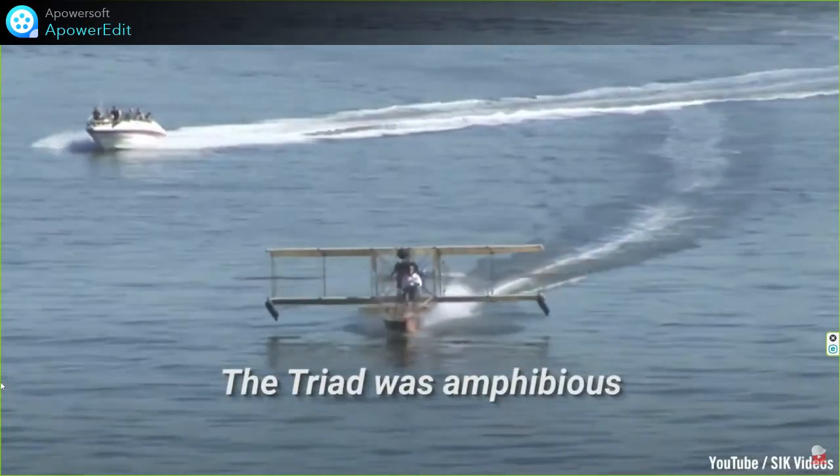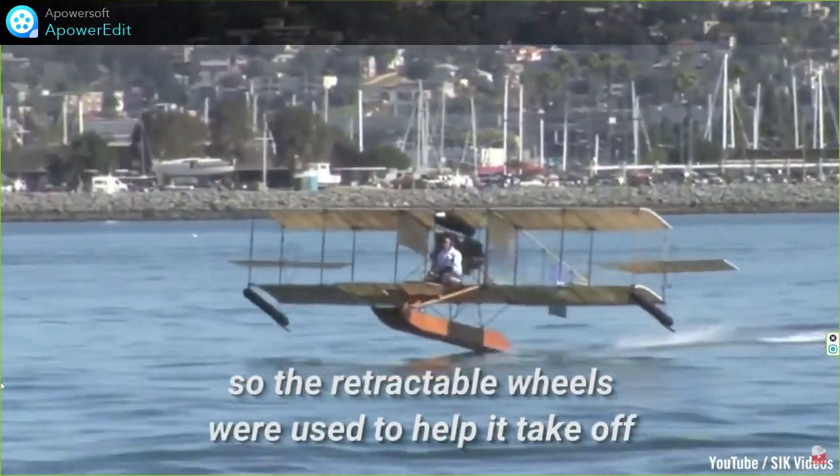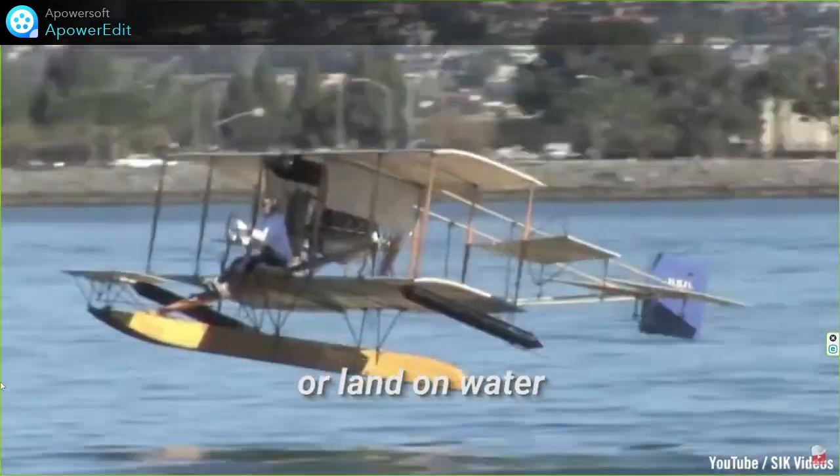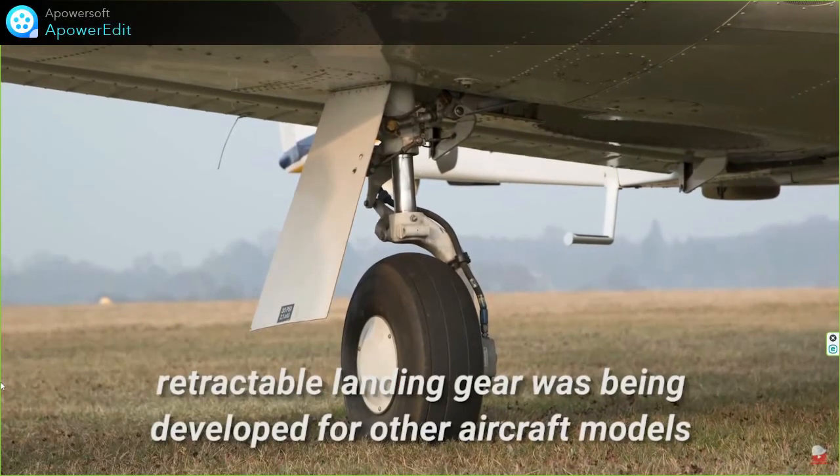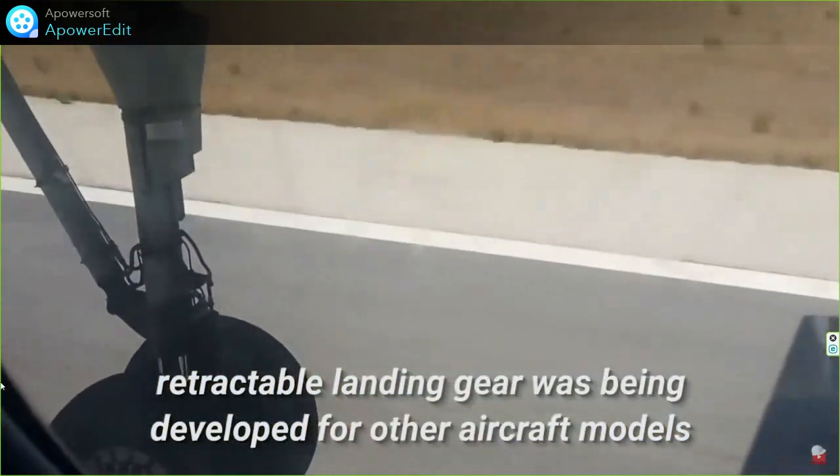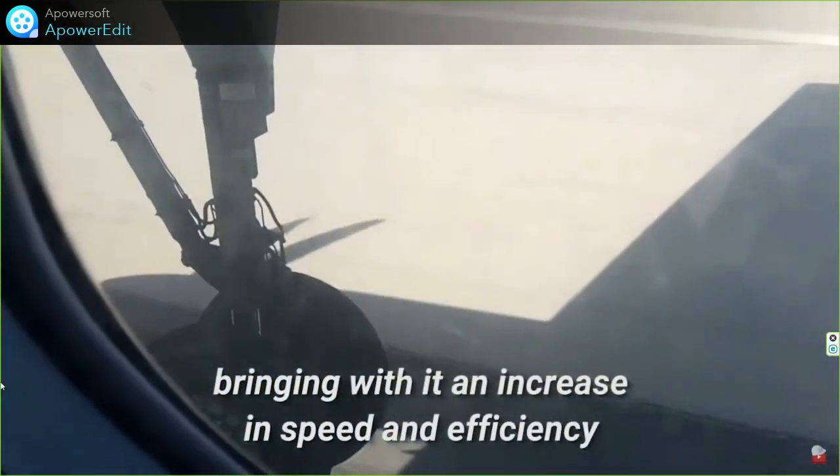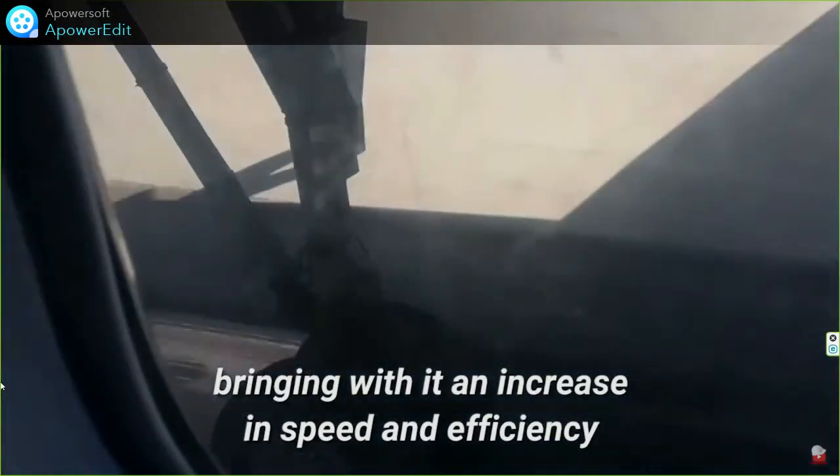The triad airplane in 1911 was amphibious, so the retractable wheels were used to help it take off or land on water. By the 1930s, retractable landing gear was being developed for other aircraft models, bringing with it an increase in speed and efficiency.